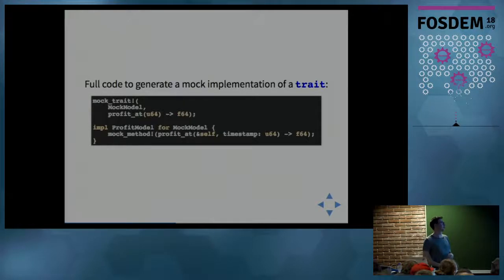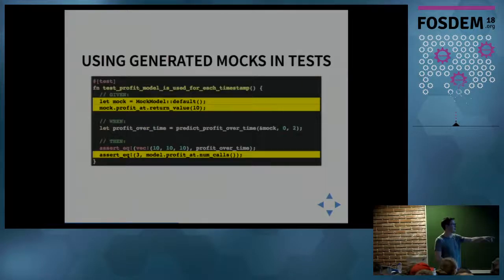Actually using this, if you wanted to run through three timestamps and assert that the profit over time series it generated was correct and that the profit model was used in the correct manner, we instantiate the mock by doing mock model default, which creates a default initialized mock model. We say profitAt return value 10, and then the profitAt method will just keep returning 10. So we see the actual time series it returns is 10, 10, 10.